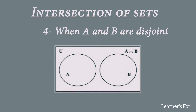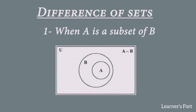The fourth case for intersection is when A and B are disjoint sets. Since there is no common element between them, taking the intersection gives an empty set. In the Venn diagram, we draw sets A and B as separate circles but we do not shade any area, because there are no common elements between the disjoint sets.